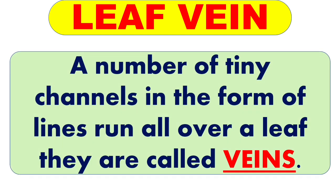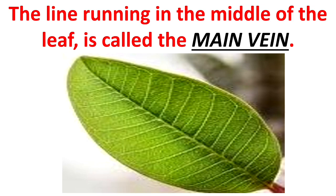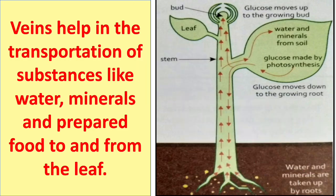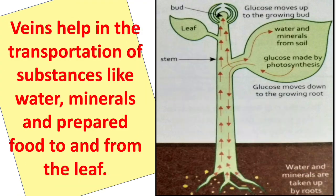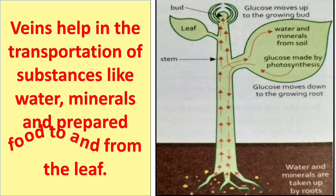Next is the leaf vein. A number of tiny channels in the form of lines run all over a leaf, and they are called veins. A line running in the middle of the leaf is called the main vein, or midrib. Veins help in the transportation of substances like water, minerals, and prepared food to and from the leaf.